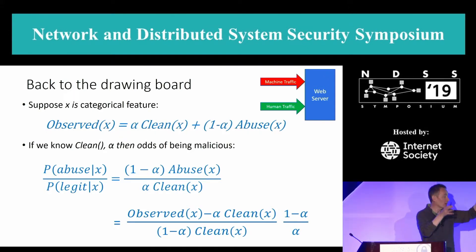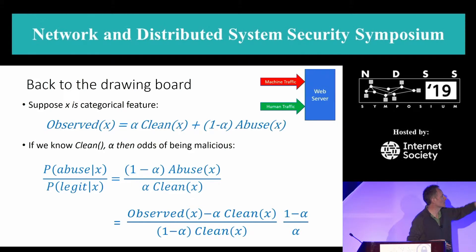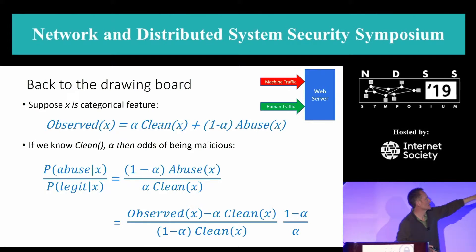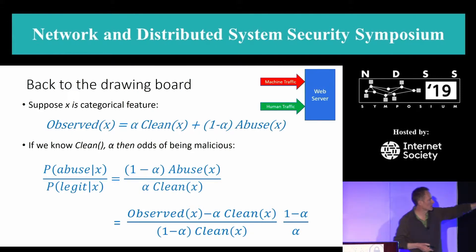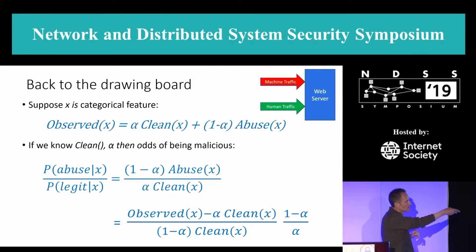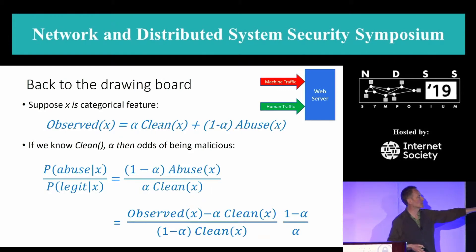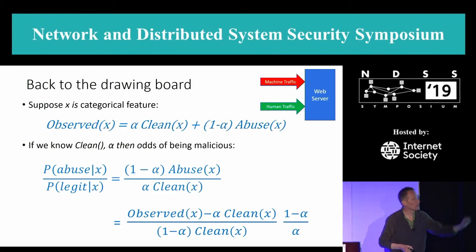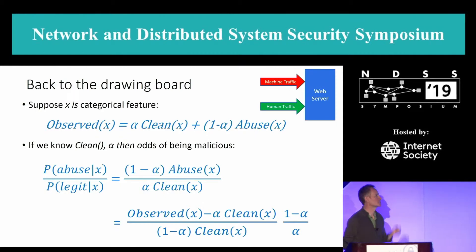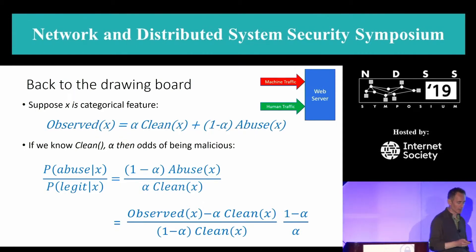Alpha is the fraction that is good, and there's the clean and the abuse distribution. With three unknowns, I write one in terms of the other two. The odds that something is abusive given my observation, with some manipulation, is observed minus alpha times clean — some other terms. The point to notice is I've taken the abusive stuff out and represented it in terms of observed and clean. So if I knew alpha and I knew clean, I can get the odds ratio that any particular thing is malicious.